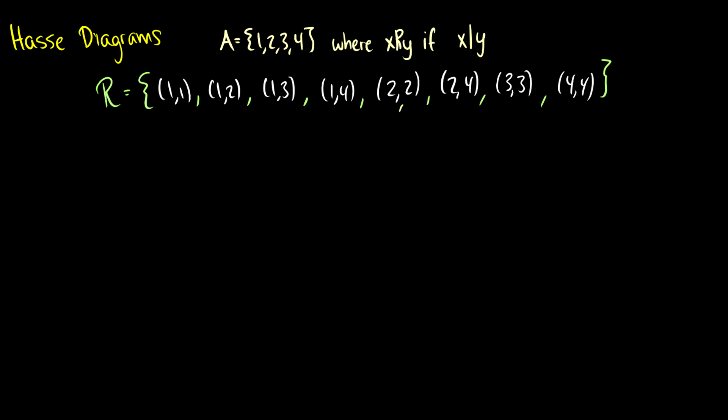We should check to see if this is a partial order. Is it reflexive? Well, we have (1,1), (2,2), (3,3), and (4,4) — so we're good. Is it transitive? We have (1,2) and (2,4), so we should have (1,4) — we're good. And anti-symmetry: we have (1,2) but not (2,1); (1,3) but not (3,1); (1,4) but not (4,1); (2,4) but not (4,2). So we're looking good. And of course the reflexive pairs like (1,1) satisfy anti-symmetry since one equals one.